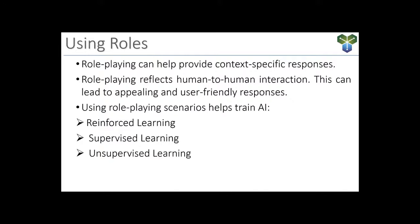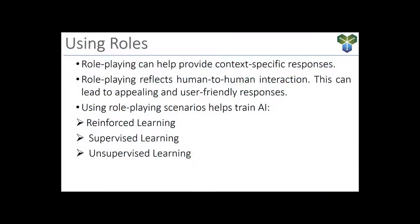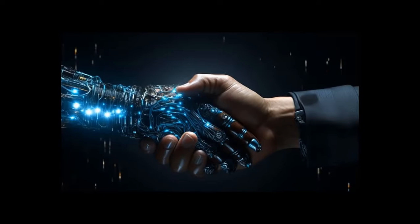Essentially, role-playing is the process of stepping into a character's shoes and providing context-specific responses that strive to reflect human-to-human interactions. This process can lead to more appealing and user-friendly responses. It isn't just for entertainment purposes — it's actually an effective tool for developing artificial intelligence, especially when training ChatGPT. When we use role-playing scenarios while interacting with AI, we're developing vast data sets that help AI learn the many ways humans communicate. This includes emotional cues, idioms, and the context that informs our dialogue.